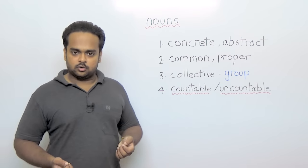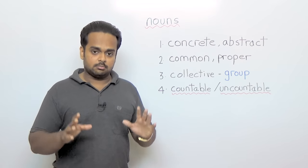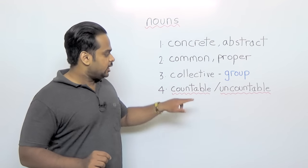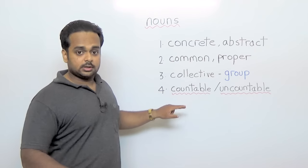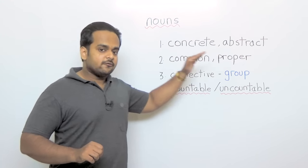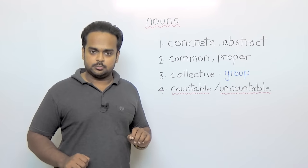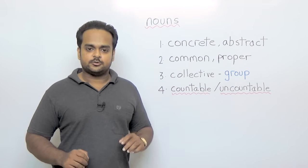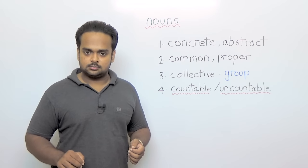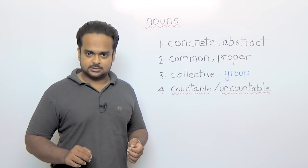And finally, we looked at countable and uncountable nouns. We discussed a number of rules. Remember that the most common mistake is using less with countable nouns—it's wrong. Less is used with uncountable nouns. Fewer is used with countable nouns. Alright, so that brings us to the end of this lesson. I hope you enjoyed it. Remember to subscribe to this channel and I will see you in the next lesson.